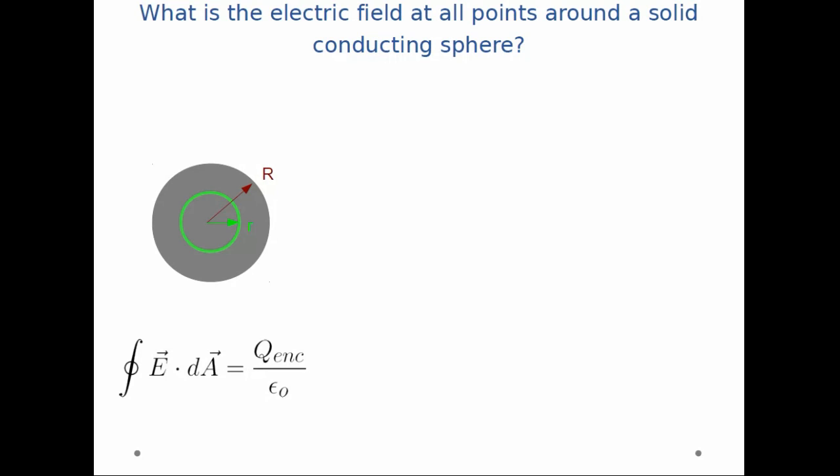and I go through the analysis. I break up the dot product, and the angle between the area vector and the electric field vector is still 0, so cosine 0 is 1.